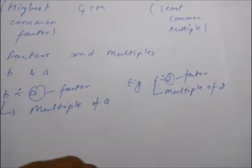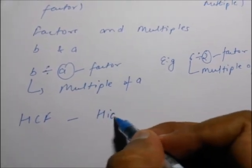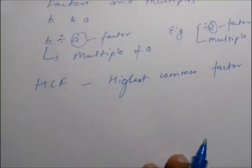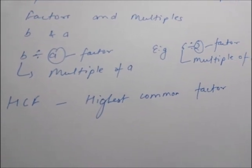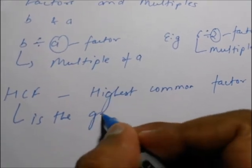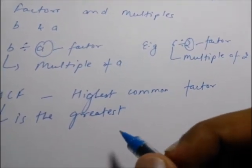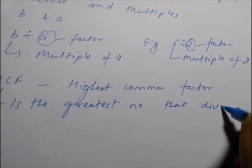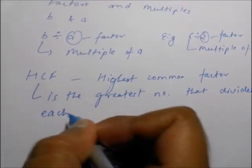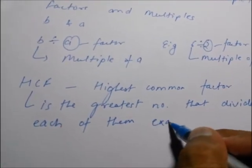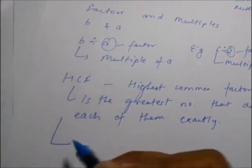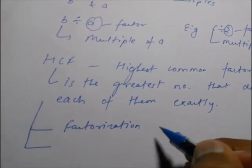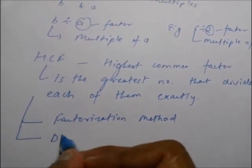Now let's come to HCF. As I told you, HCF is highest common factor. HCF between 2 numbers or more than 2 numbers is the greatest number that divides each of them exactly. It can be calculated by two methods.